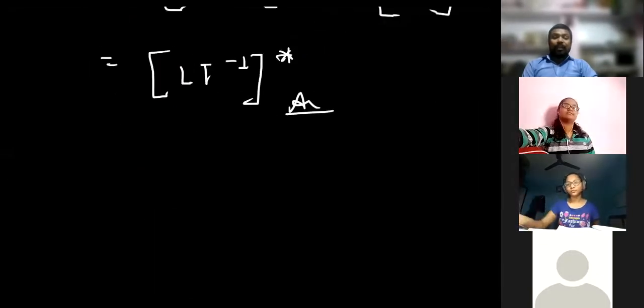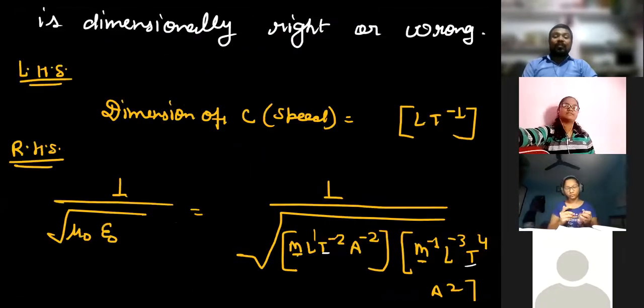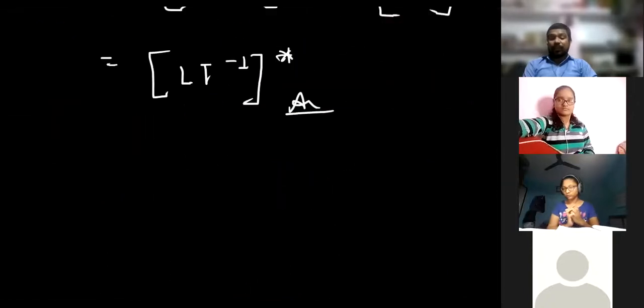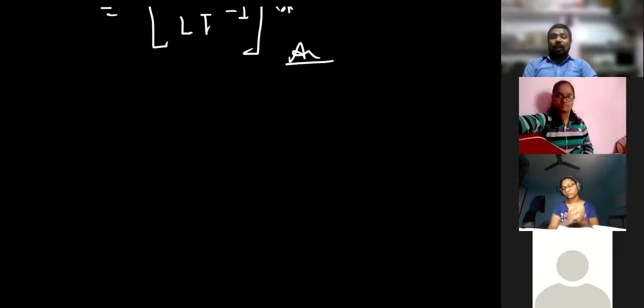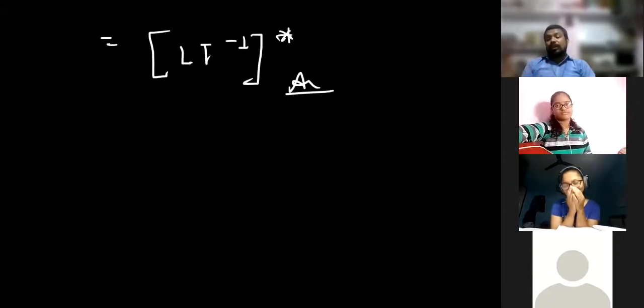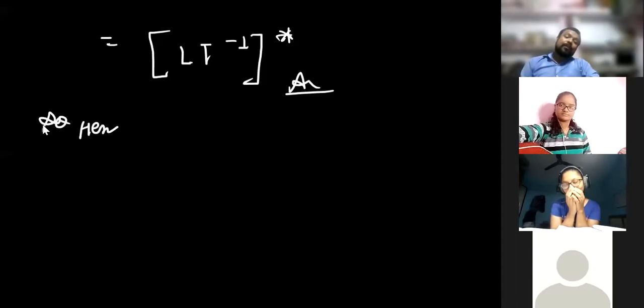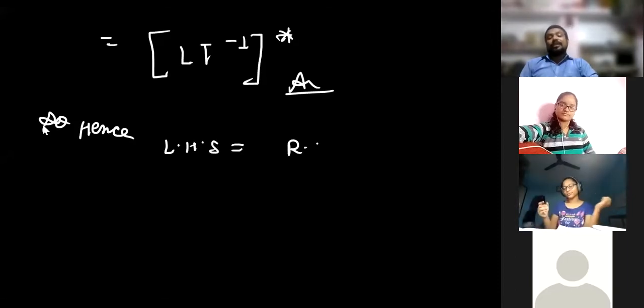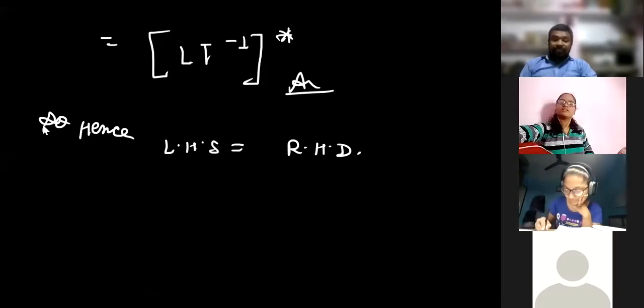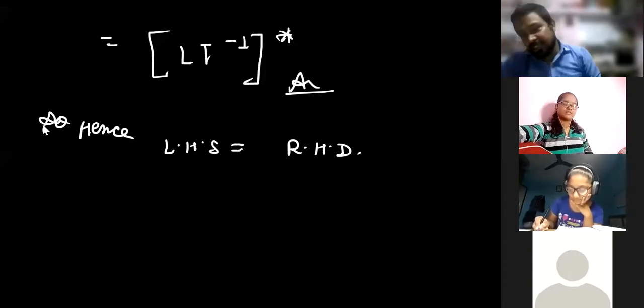So you can see that the dimension of speed of light C is LT⁻¹, and the dimension of 1 upon square root of μ₀ε₀ is also LT⁻¹. Therefore LHS equals RHS, and we can say this formula is also dimensionally correct.